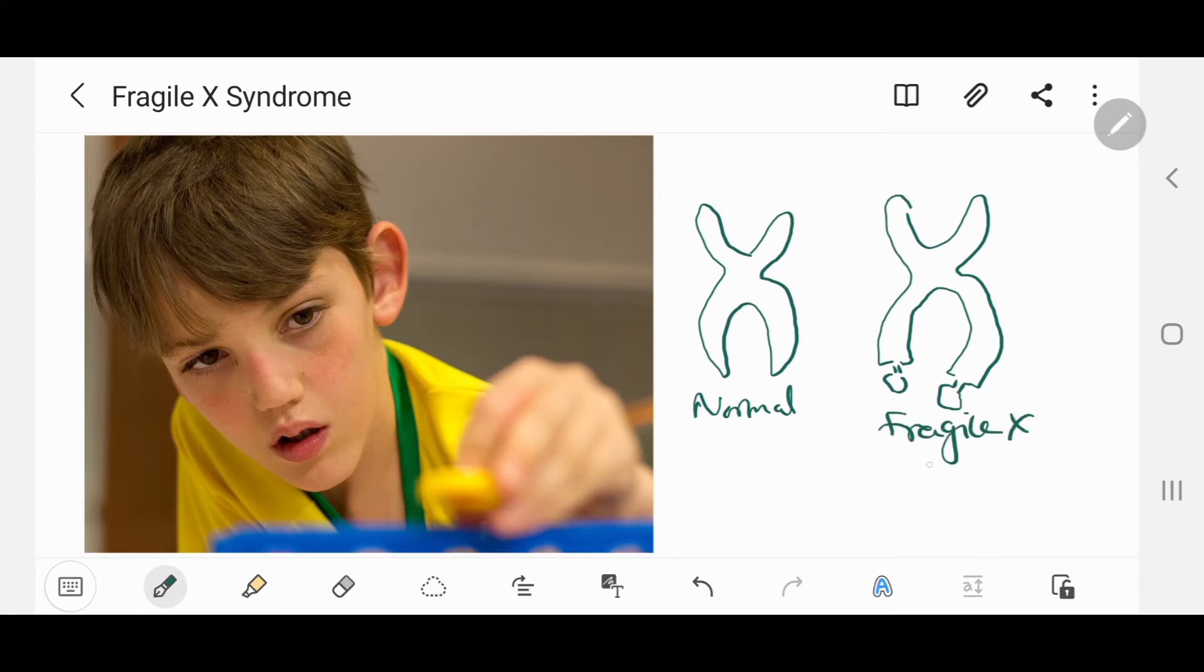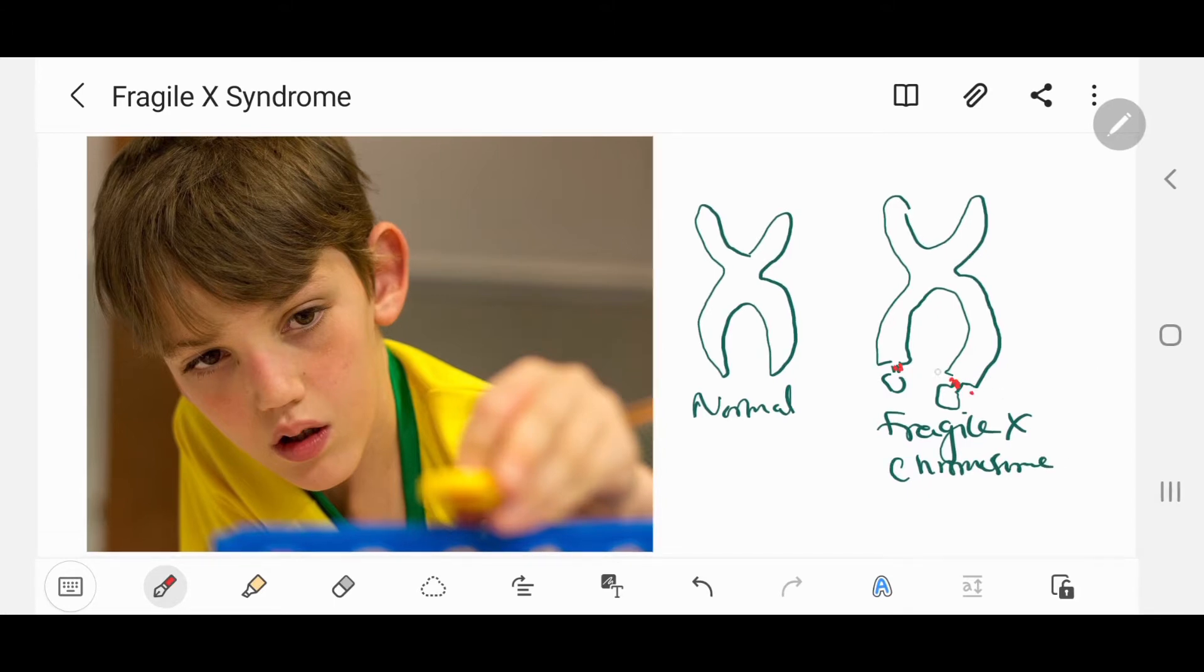Here's the normal chromosome and here's a chromosome with Fragile X Syndrome. As we can see here, the chromosome has a narrow appendage that looks as though it is about to break.